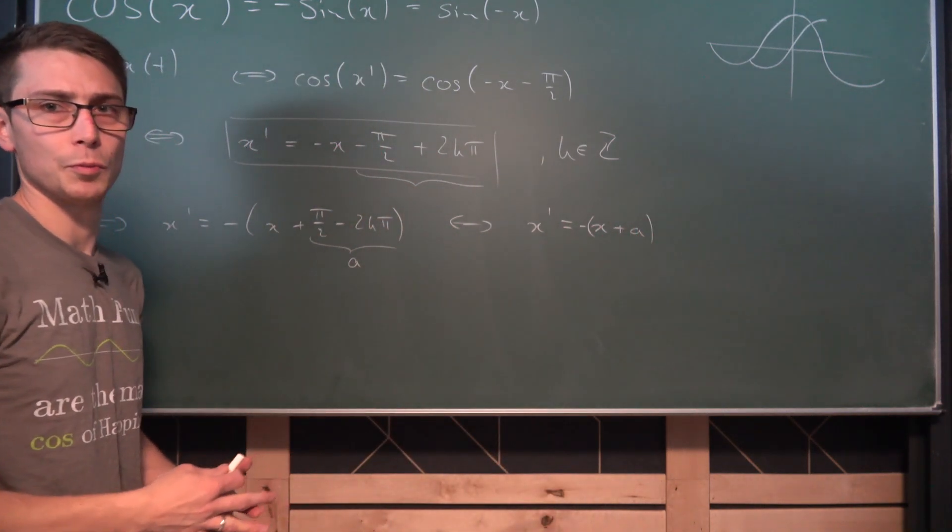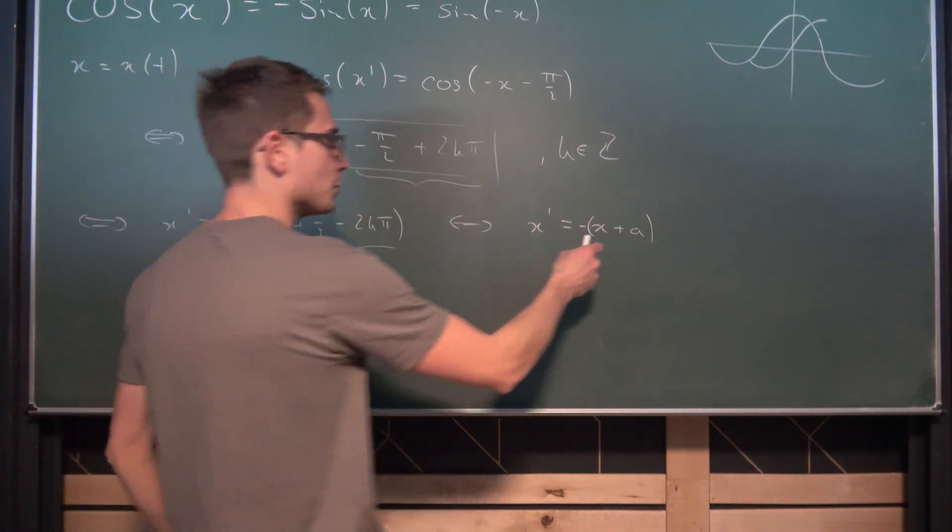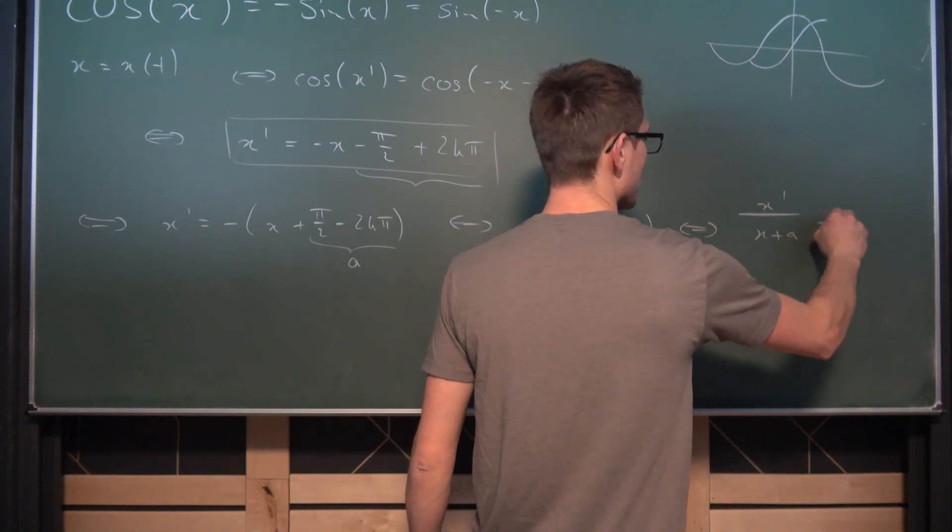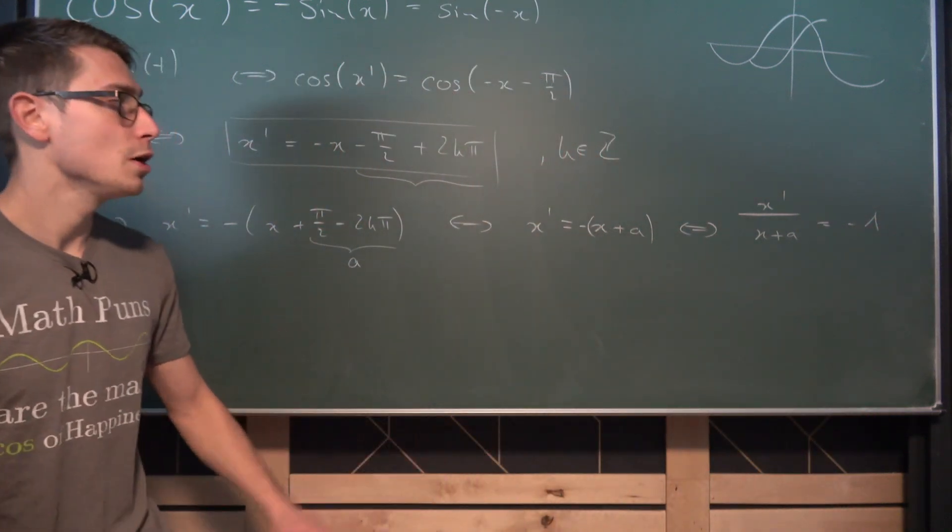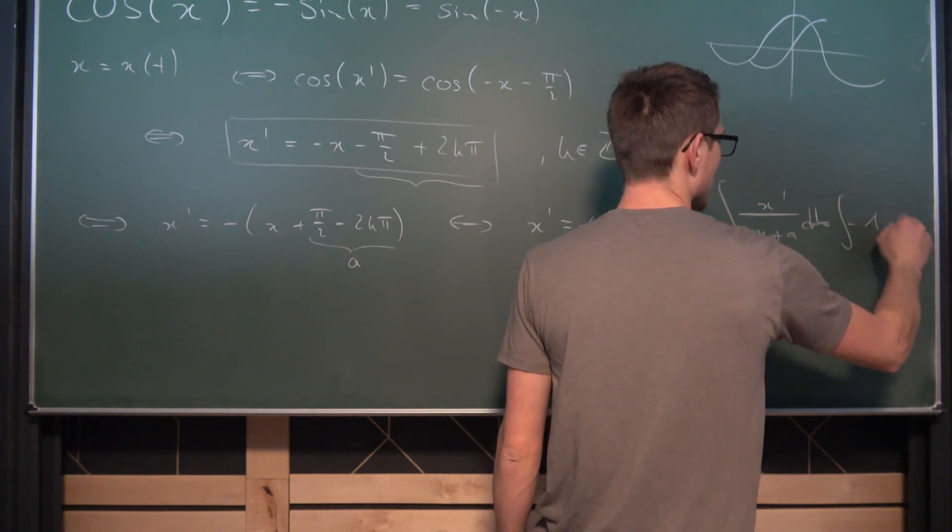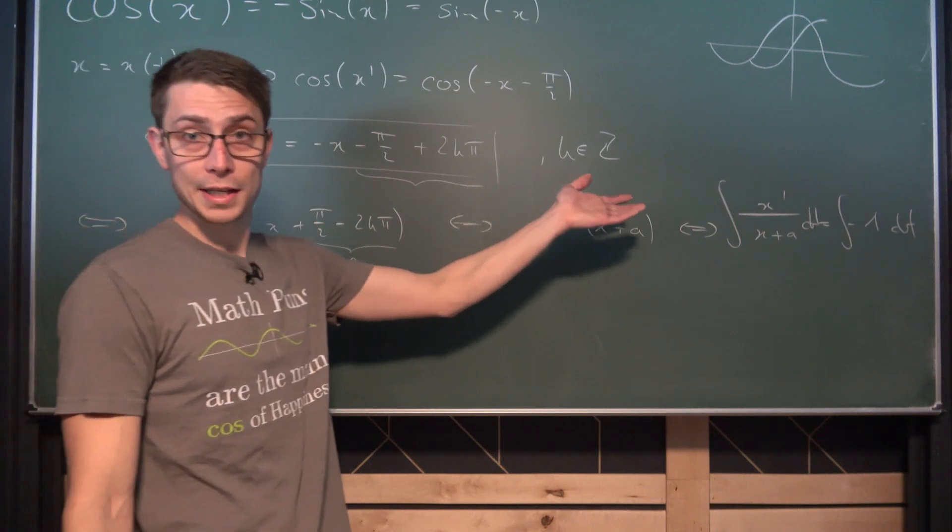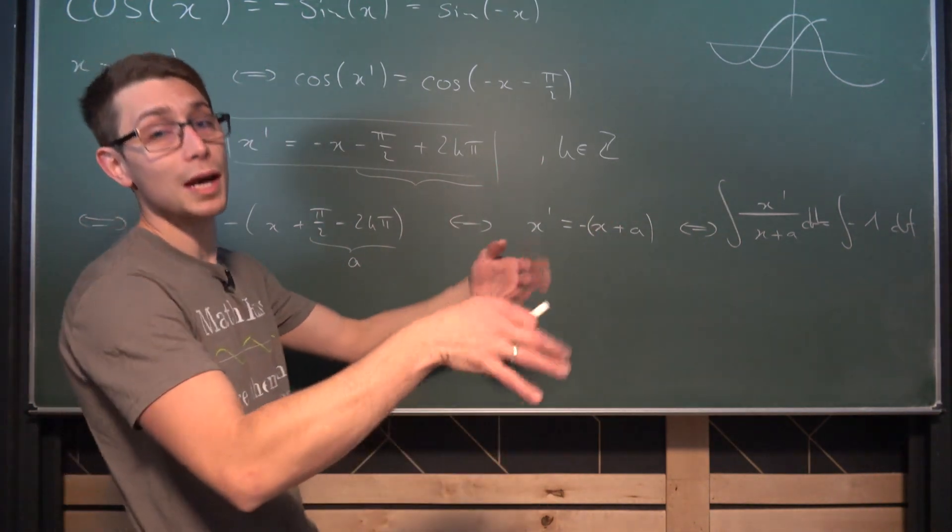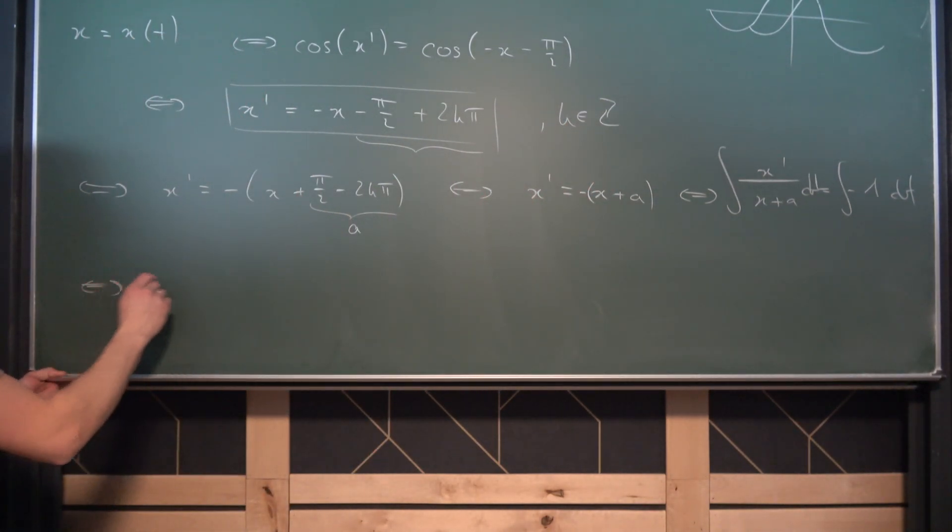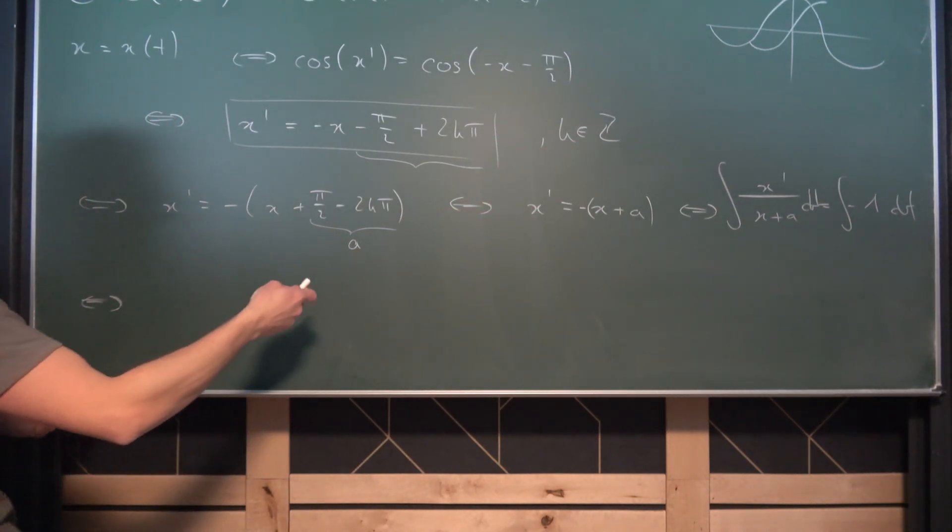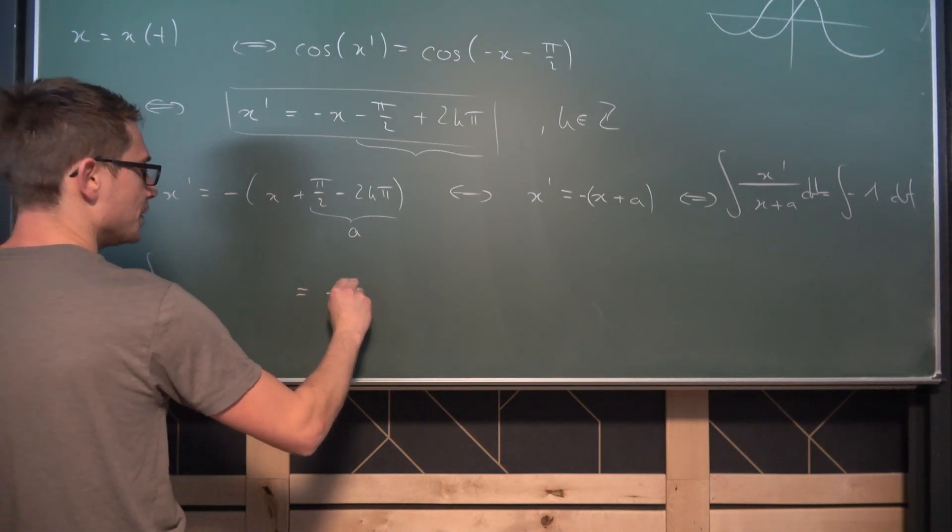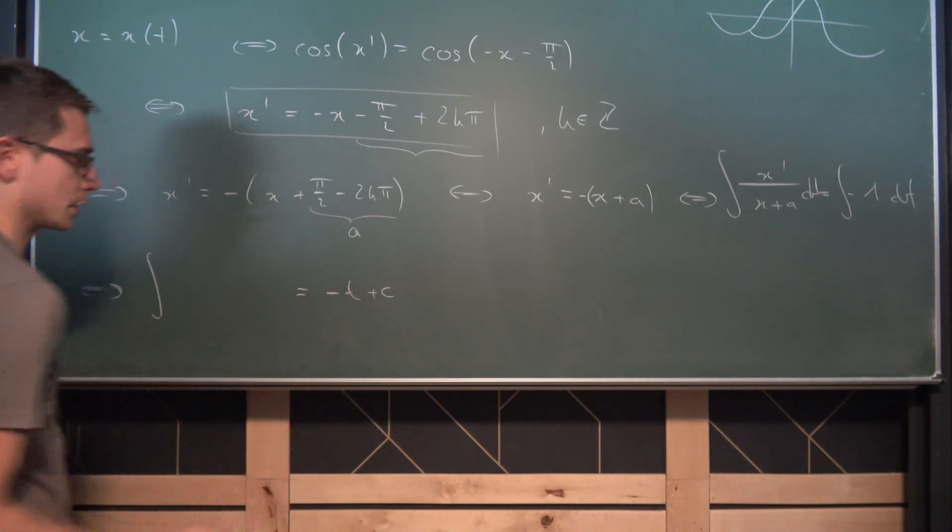And now this is easily solvable by just separation. So we are going to divide both sides by x plus a on both sides giving us that x prime divided by x plus a is equal to negative one. And as usual we are now going to integrate both sides now with respect to t because we have successfully separated it. Integrating negative one is fairly easy with respect to t that's just negative t plus some arbitrary constant. Now k sucks I'm going to use it as a c because we don't want to confuse it with our k element of the positive and negative integers. So we are going to get that the integral of blah blah blah is equal to negative t plus some arbitrary constant c.